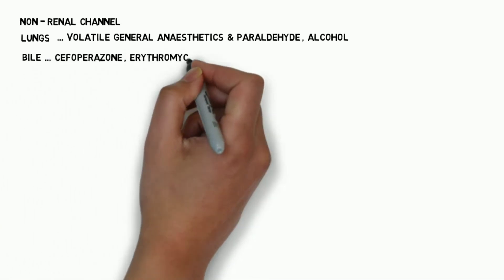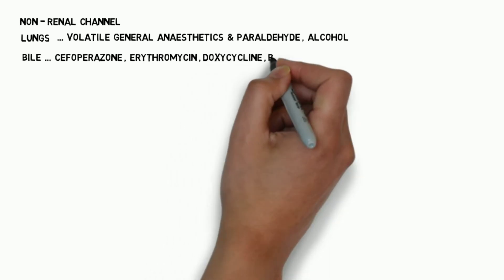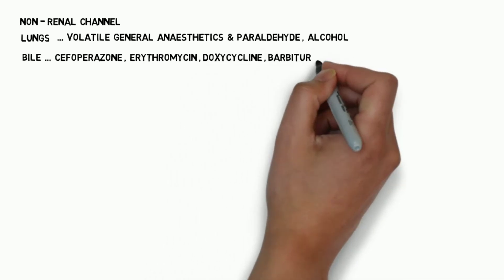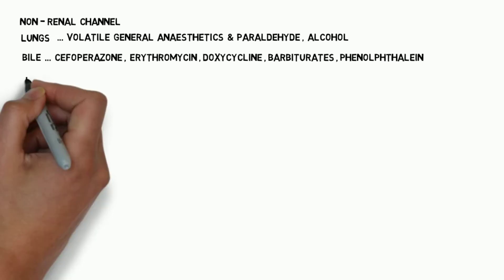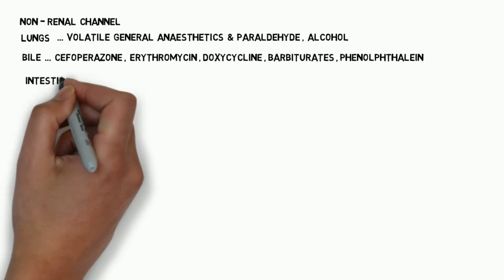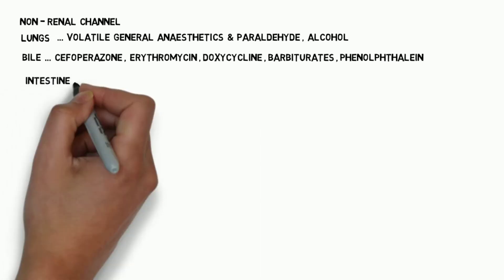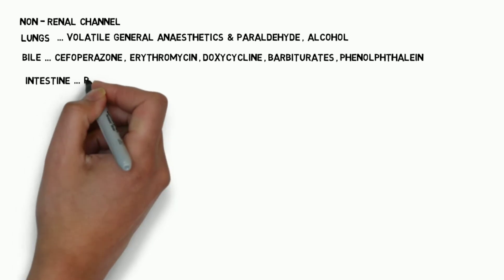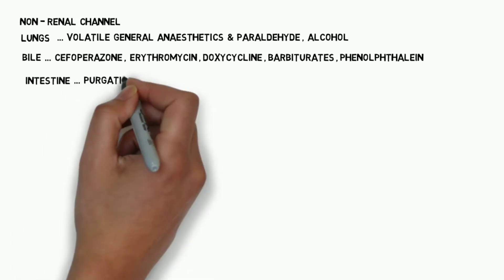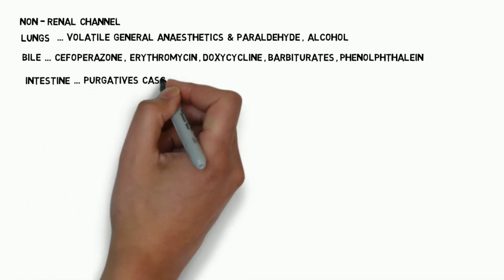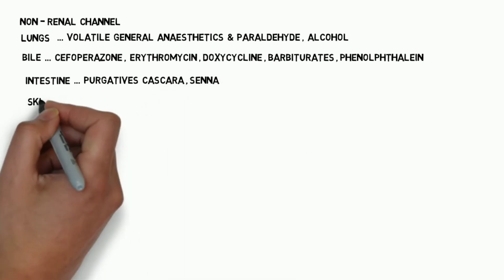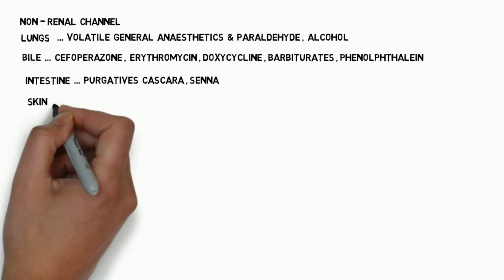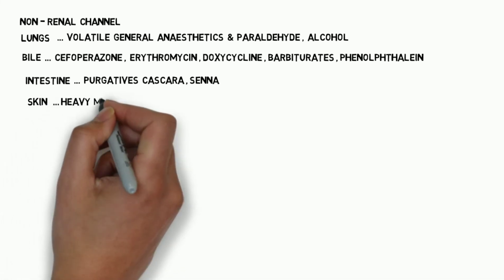Via bile, antibiotics such as cefoperazone, erythromycin, doxycycline, and drugs such as barbiturates and phenolphthalein are excreted through the bile. Via the intestine, purgatives such as cascara and senna are excreted through the intestine after their desired action.